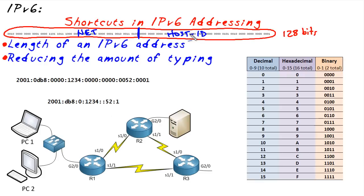The host ID is a unique identifier for individual devices on that street, and the dividing line — shown in blue — is made up by the mask. So if we have a 64-bit mask, it says the first 64 bits are the network, and the last 64 bits are used for host addressing.